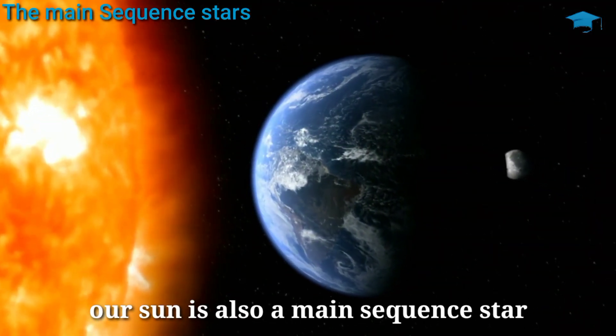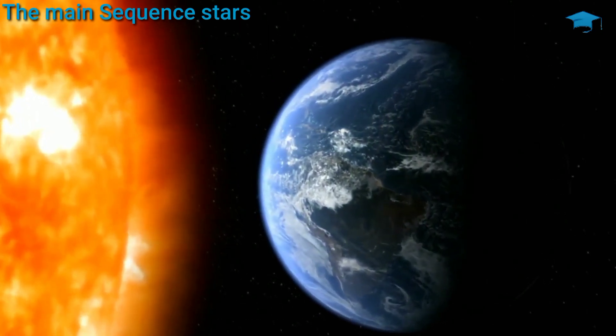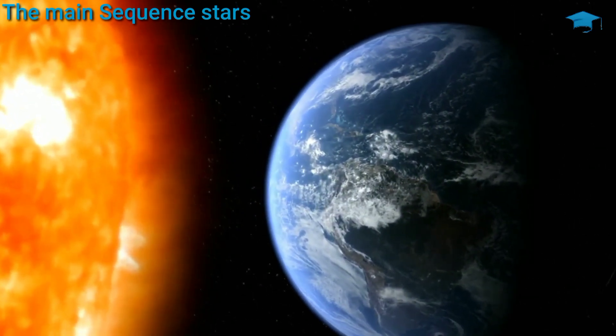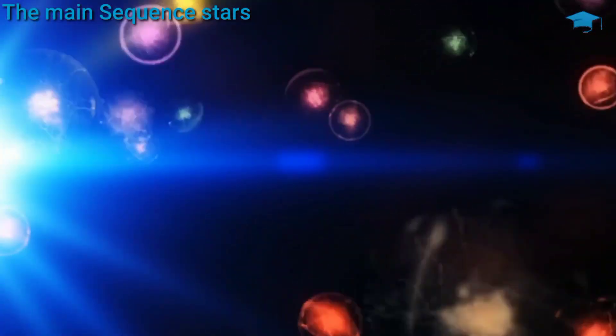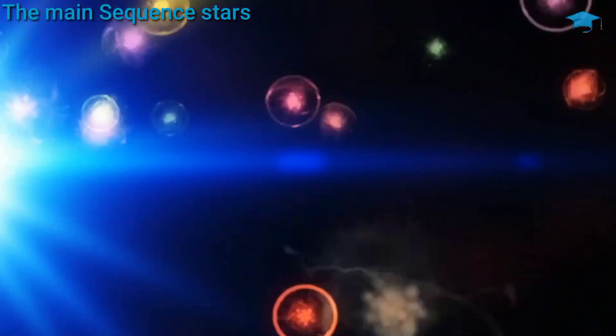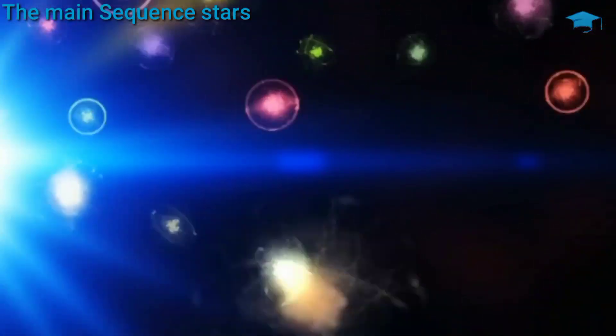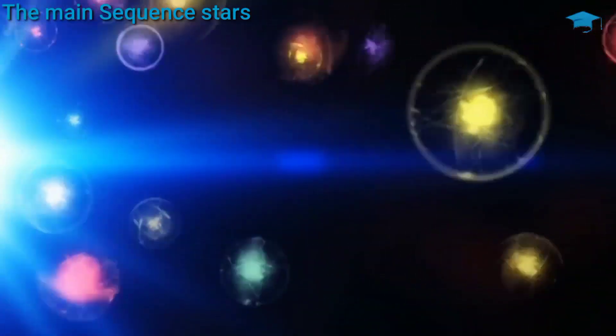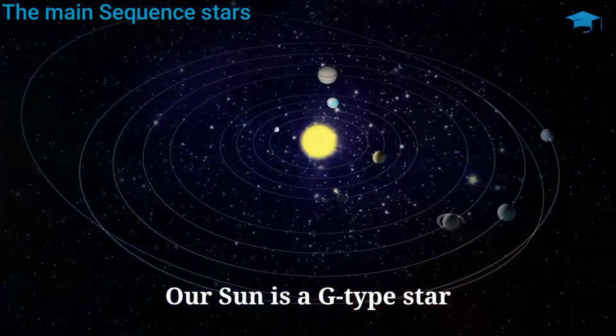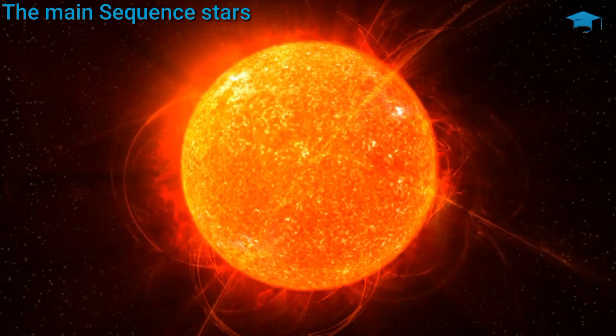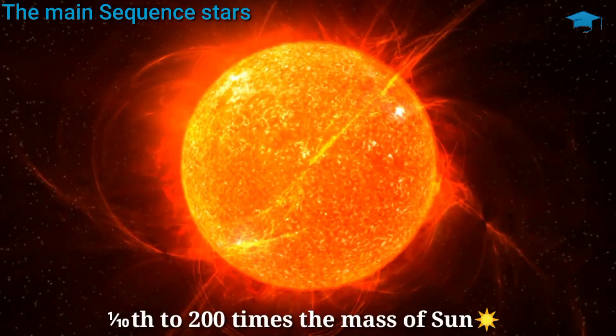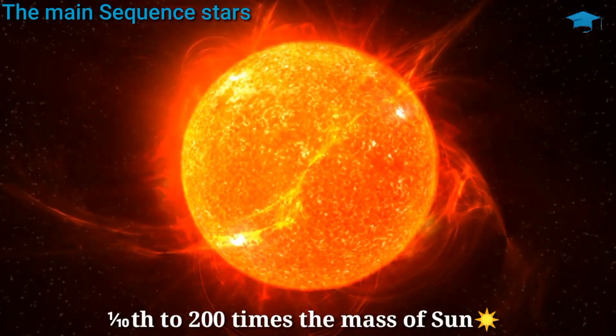Now from this you can imagine that our sun is a main sequence star. Around sun their life exists. 90% of stars in our universe are main sequence stars, so there is a high chance of life existing outside earth in our universe. Our sun is a G type star in that classification. And most of the main sequence stars range from 1/10 to 200 times the mass of sun.